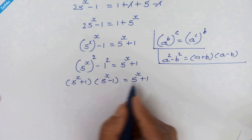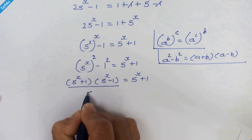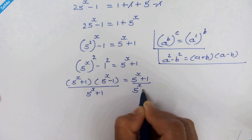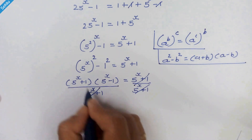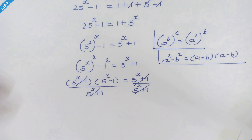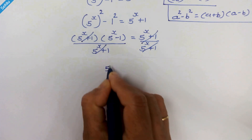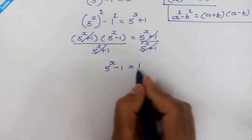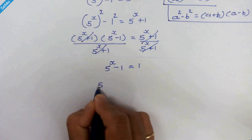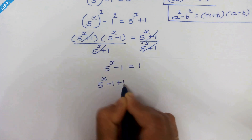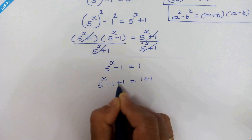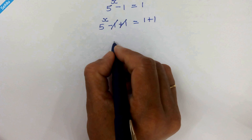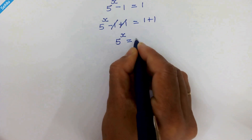These two expressions 5 raised to x plus 1 are the same, so if we divide both sides by 5 raised to x plus 1, these terms cancel out. So in the next step we have 5 raised to x minus 1 is equal to 1, and therefore 5 raised to x is equal to 2.